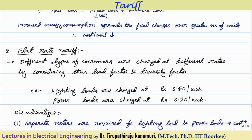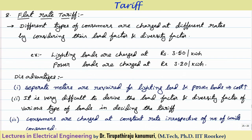The second type is flat rate tariff. Different types of consumers are charged at different rates by considering their load factors and diversity factors. Diversity factor means, for example, some consumer is using the power during off-peak hours — in that case we will give some subsidy to them, meaning we will supply at a lesser cost. Similarly, load factor means some types of loads run for more time, some run for less time, and depending on the load factor of the type of load, the charge will be imposed.